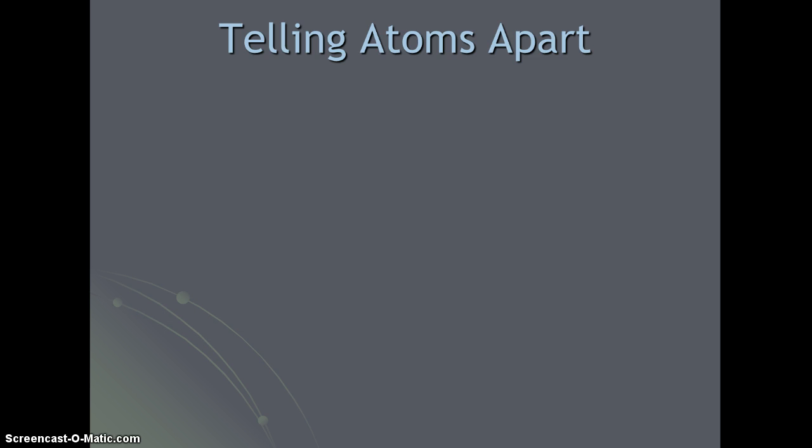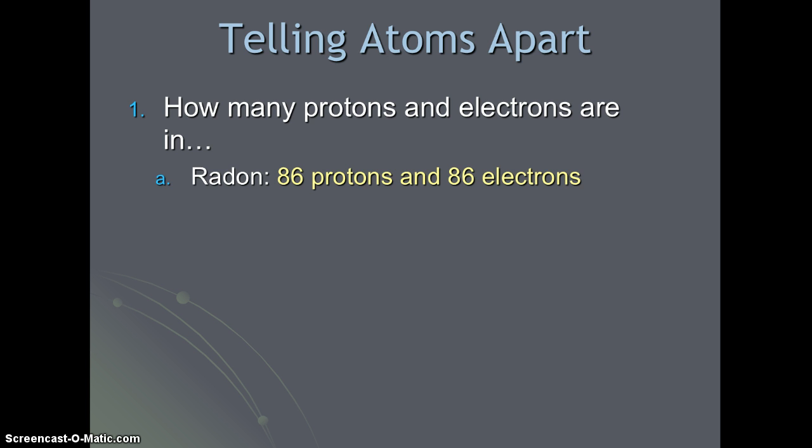Let's see how you did. How many protons and electrons are in radon? If we look at the periodic table, radon is number 86, which means it has 86 protons. And because it is a neutral atom, it also has 86 electrons. Magnesium is number 12 on the periodic table and has 12 protons and 12 electrons.